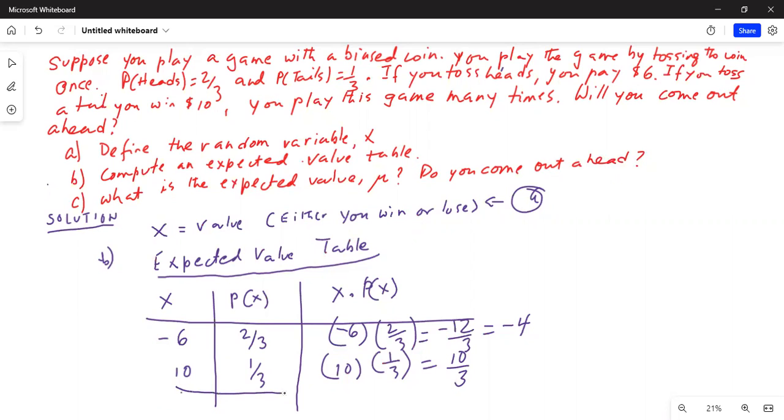So we know the expected value E(X) is equal to μ, is equal to sum of X times P(X), which is minus 4 plus 10 over 3. And that is equal to minus 12 by 3 plus 10 over 3.